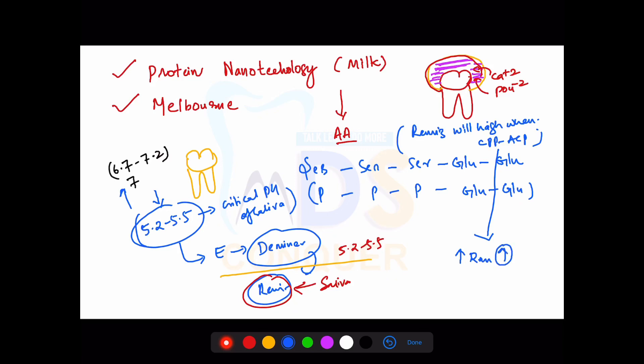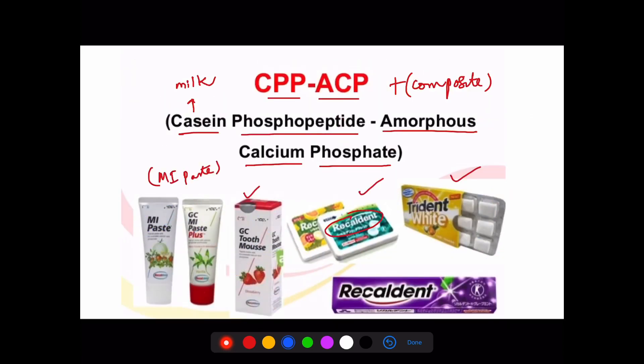I hope you're clear with CPP-ACP. This is becoming a most commonly used term in recent examinations of integrated NBDE. This is very important for all entrance examinations. It's a new and advanced thing available in the market but may not be covered in most MCQ books and textbooks. Please make a note about CPP-ACP.